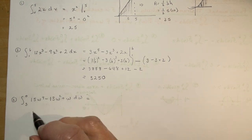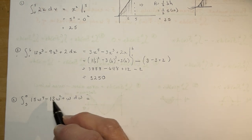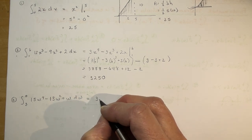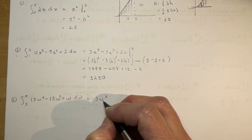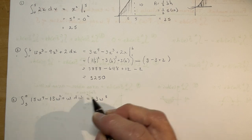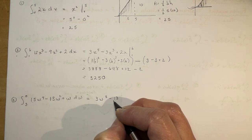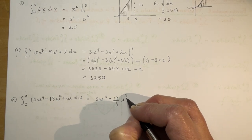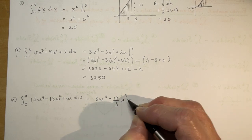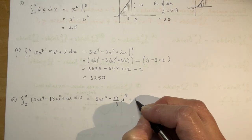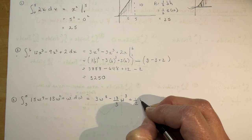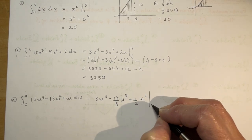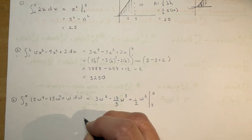Let's do the antiderivative of these terms. I add 1 and divide by 5, giving (3/5)W⁵. Add 1 gives 3, minus 13 divided by 3, giving minus (13/3)W³. And add 1 gives 2, divided by 2 is (1/2)W². That's being evaluated between 3 and 0.